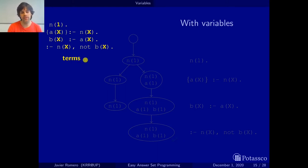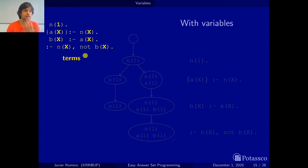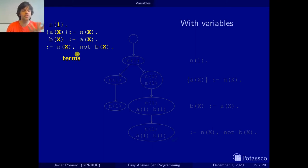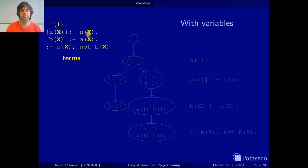A term is either a constant or a variable. Terms are the elements of the program used to refer to objects, things, or beings. If we refer to them in a specific way we use constants, and if we refer to them in general we use variables. Here there is just this X, but variables in general are represented by words that start with uppercase.